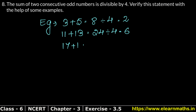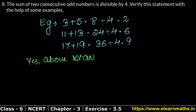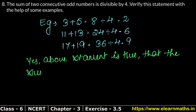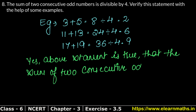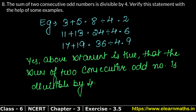Take 17 and 19. Adding them gives 36. And 36 is also divisible by 4. So above statement is true: the sum of two consecutive odd numbers is always divisible by 4. Answer.